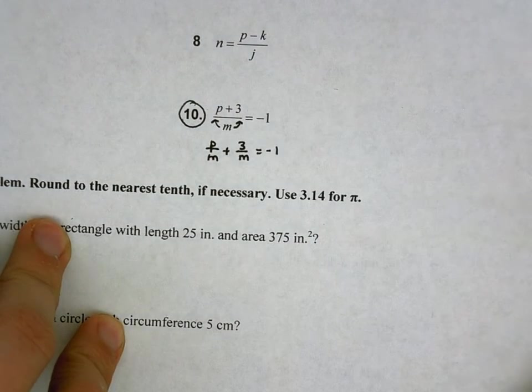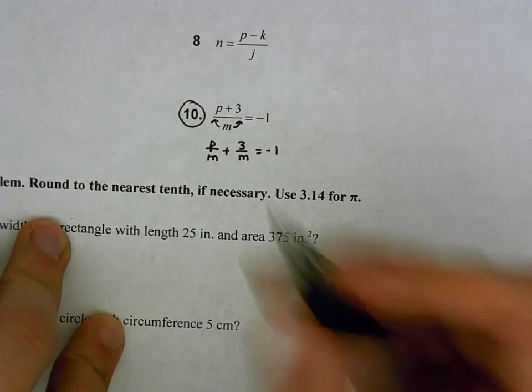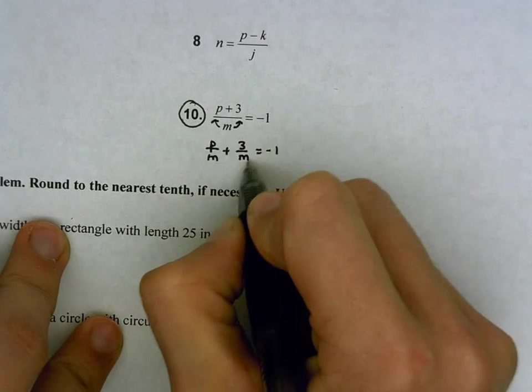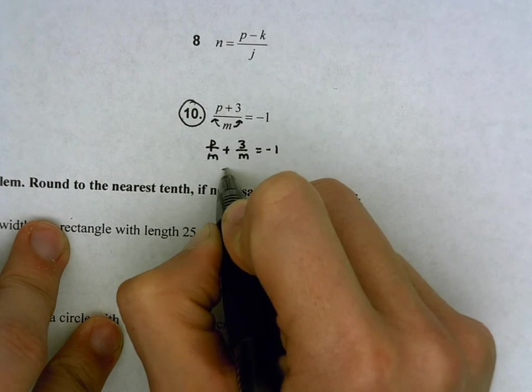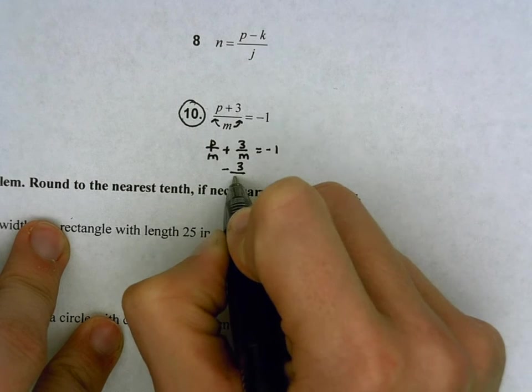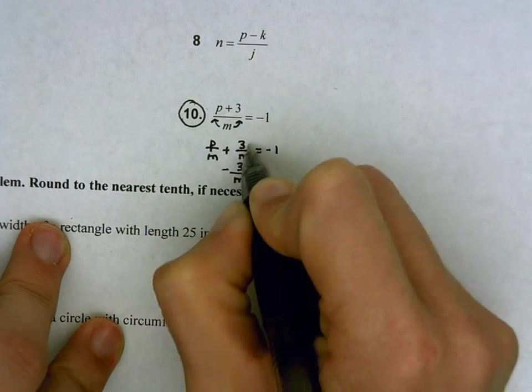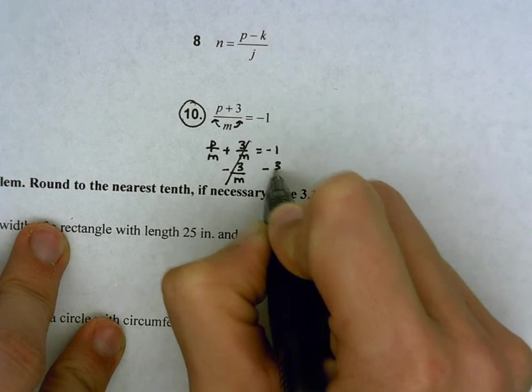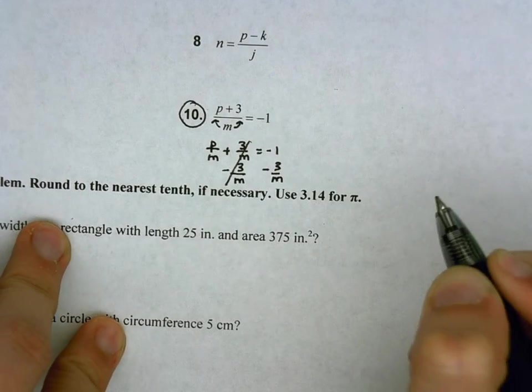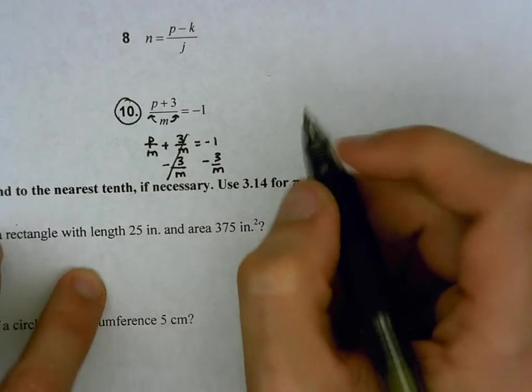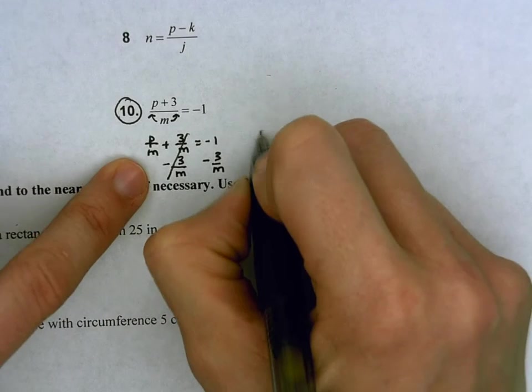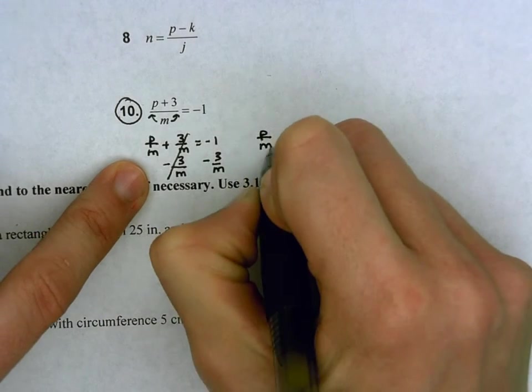And then it's SADMAP, reverse PEMDAS. We're going to undo the subtraction addition first. And right here, I have a plus 3m that's currently being attached to that m, so I'm going to undo plus by subtracting. Make sure you do it to both sides. So at this point, we've now got p over m, which is what remains on the left, and then equals negative 1 minus 3 over m.